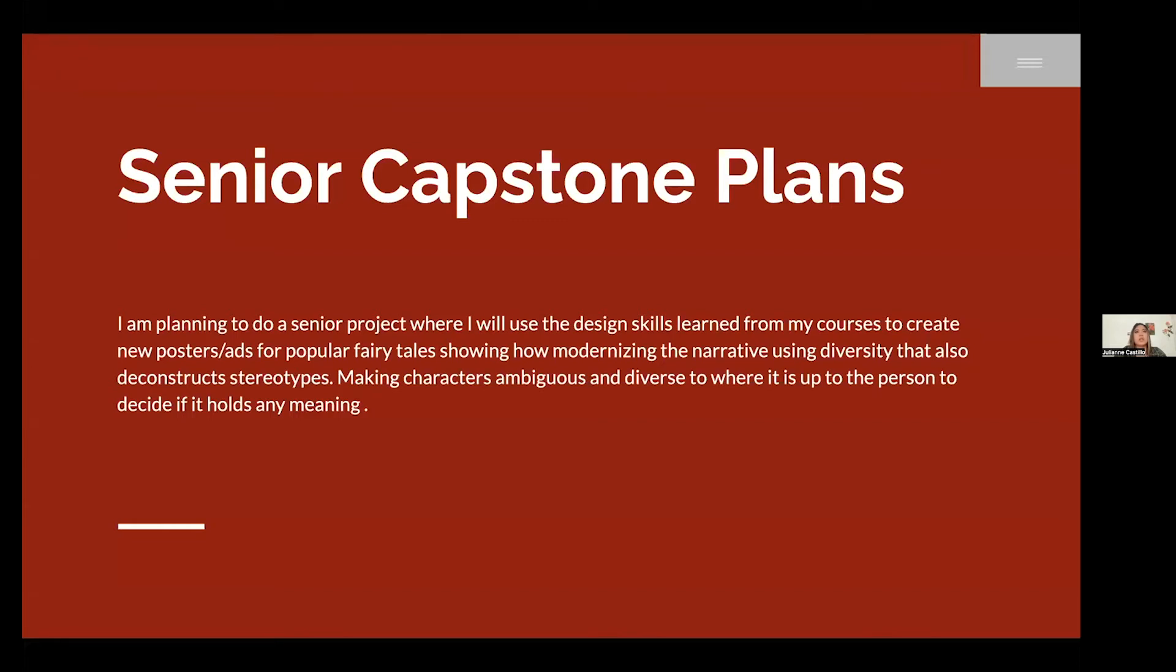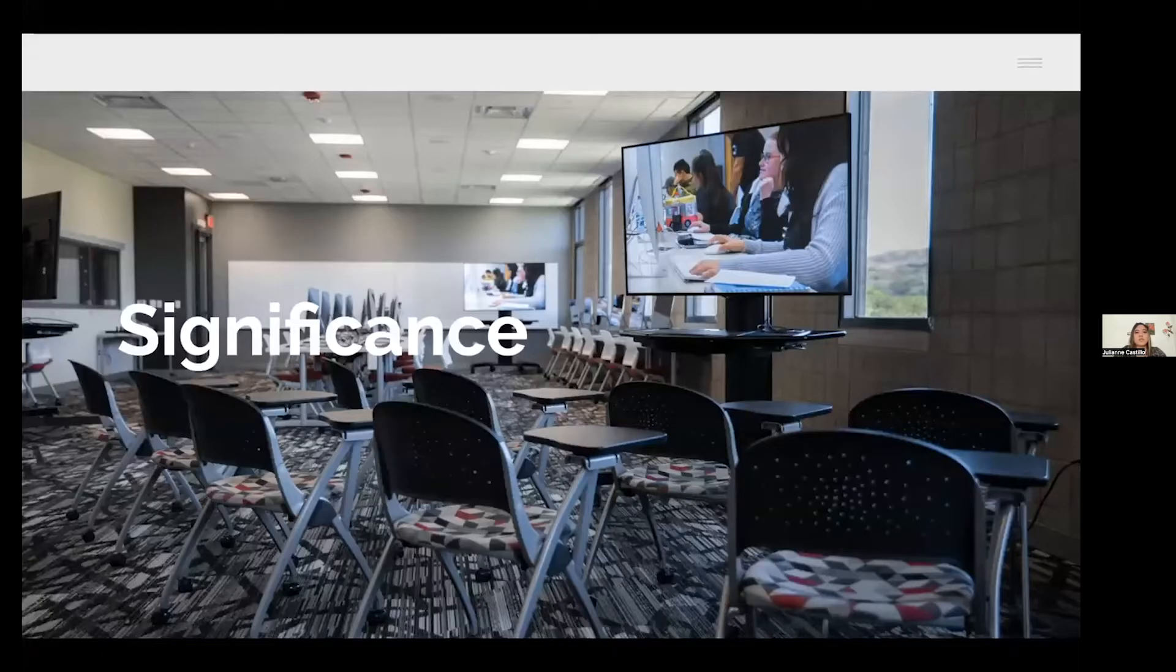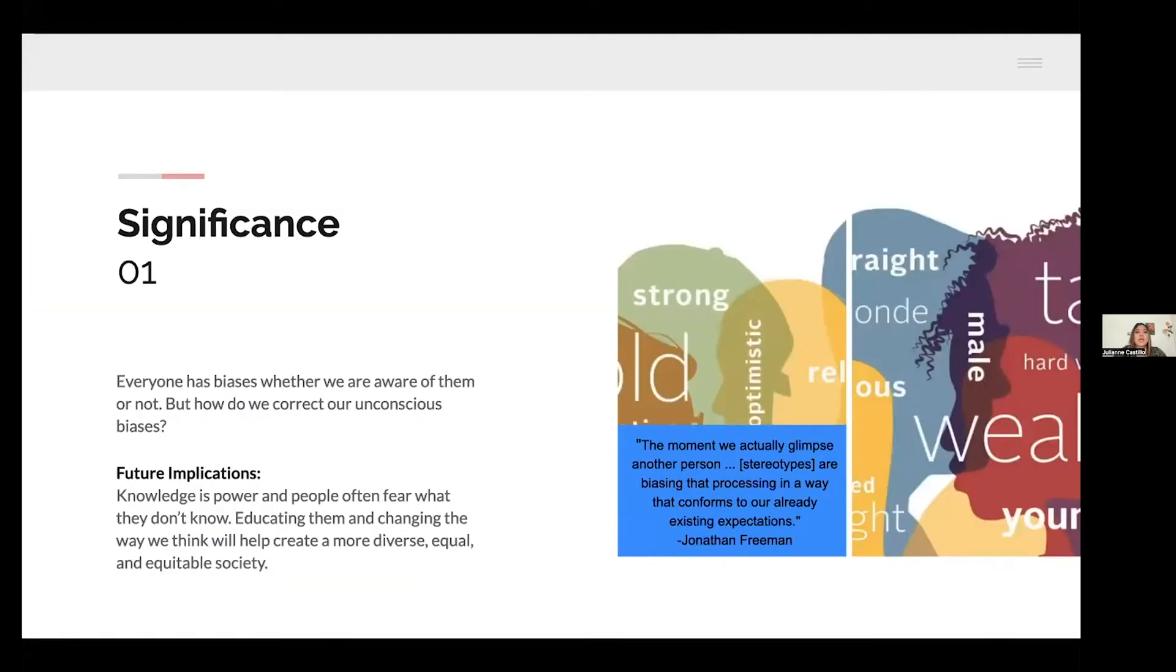Making my characters ambiguous enough and diverse to where it is up to the person to decide if it holds any meaning. Down to the significance. Everybody has biases whether we are aware of them or not, but how do we correct our unconscious bias? Knowledge is power and people often fear what they don't know. By educating them and changing the way we think, we can help create a more diverse, equal, and equitable society.